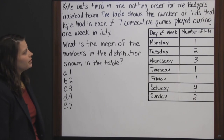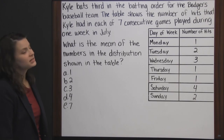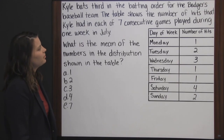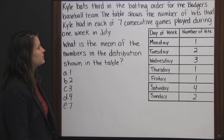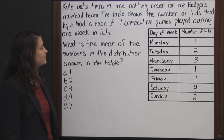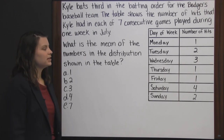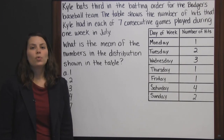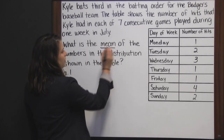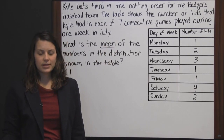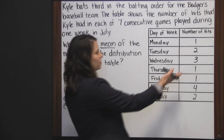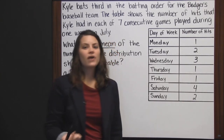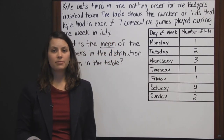Kyle bats third in the batting order for the Badgers baseball team. The table shows the number of hits that Kyle had in each of seven consecutive games played during one week in July. What is the mean of the numbers in the distribution shown in the table? The mean of a set of numbers is the average. To find the average or the mean, you must add all of the numbers together, and then divide them by the number of numbers there are.